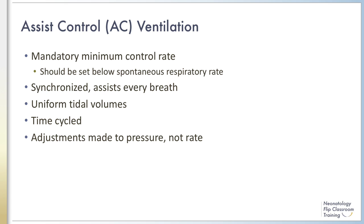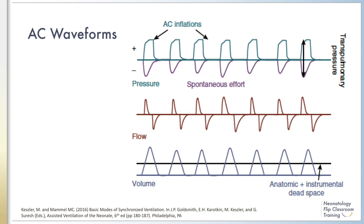Synchrony can be improved if flow cycling is used, where changes in airway flow trigger both inspiration and expiration. The mechanical rate should be set just below the infant's spontaneous rate to allow the infant to trigger their own inflations. If the control rate is set too high, there will be untriggered inflations before the infant has a chance to breathe. Weaning from AC occurs by adjustment of peak inspiratory pressure and PEEP, gradually allowing the infant to take over the work of breathing. In AC waveforms, ventilator inflation occurs with every spontaneous respiratory effort, and flow and volume are uniform with each inflation.